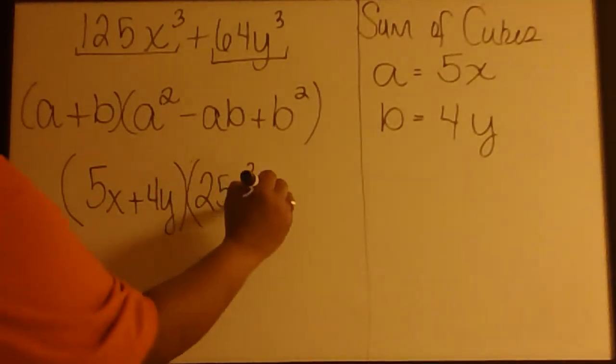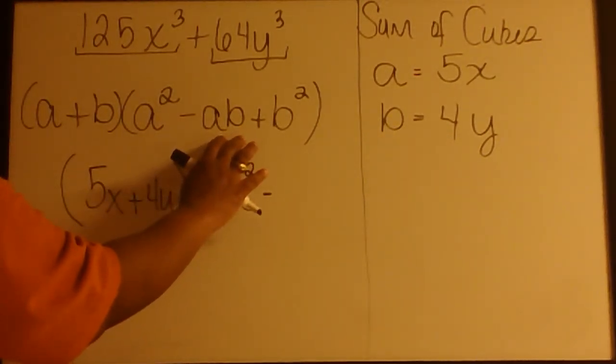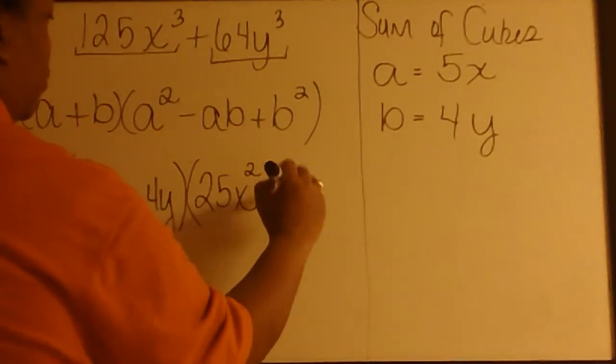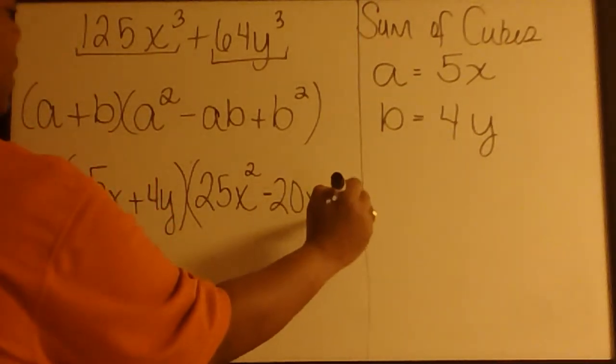Then we have a minus sign. Then we're told to multiply A and B. 5X times 4Y is 20XY. Then we have a plus sign.